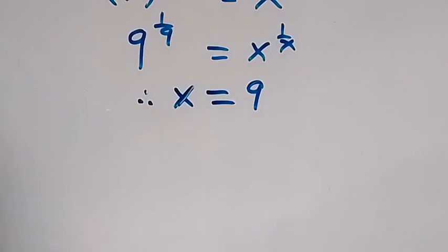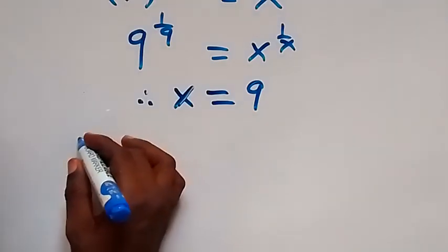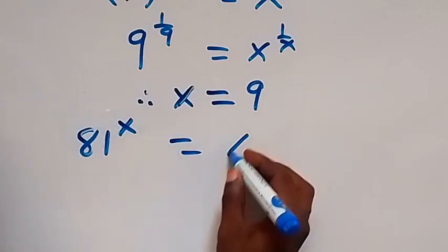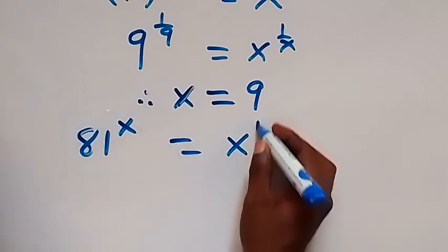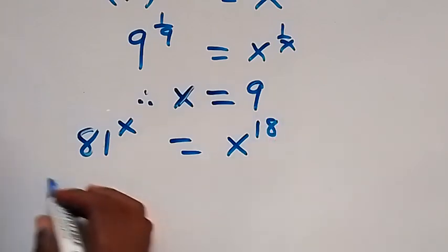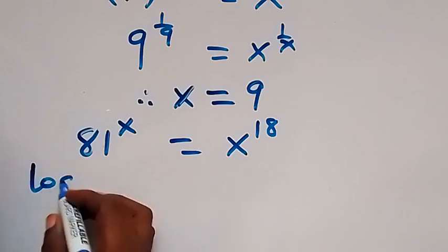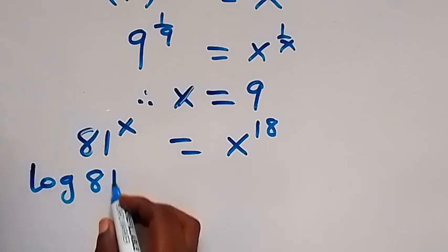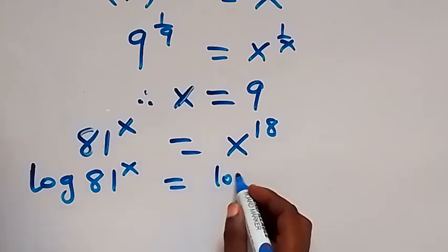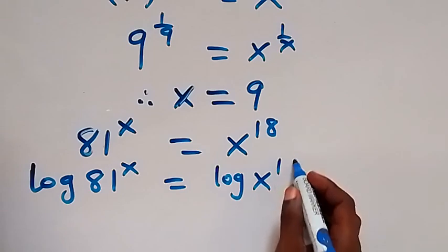Then, to use another approach: when we have 81 raised to the power of x equals x raised to the power of 18, we can decide to take the log on both sides. The log on this side is log of 81 raised to the power of x, which is equal to log of x raised to the power of 18.